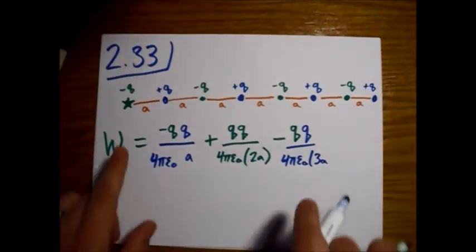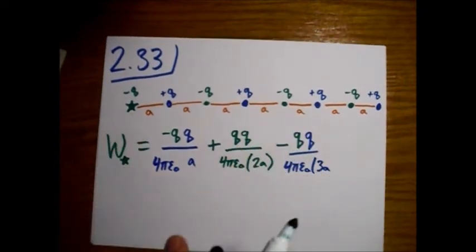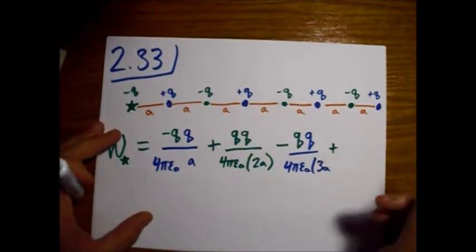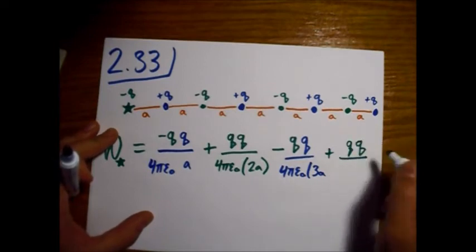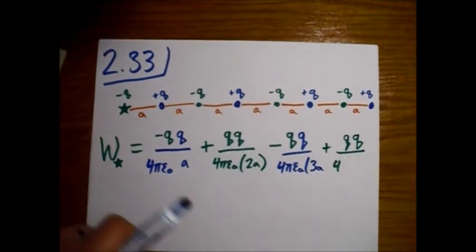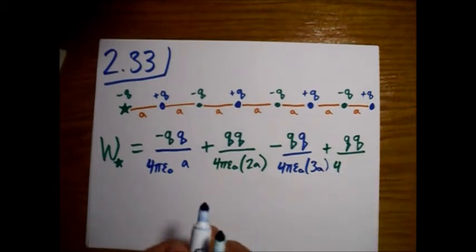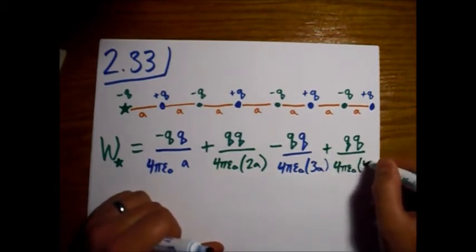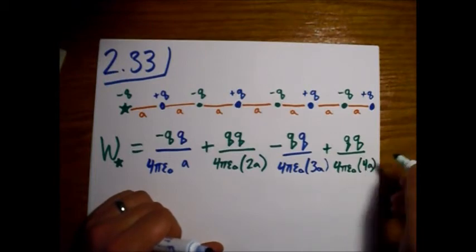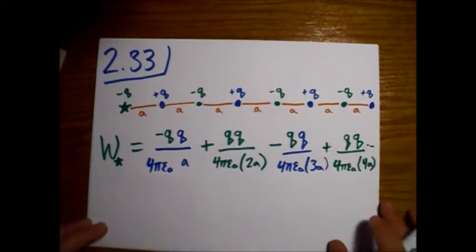And now if we look at these two green ones again, we'll have another plus sign, the minus signs cancel out. There's a q and a q. Oops, forgot my little parenthesis. 4πε₀, and now we have a distance 4a. Alright? And this goes on forever and forever.